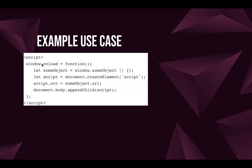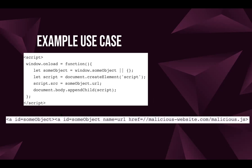Here's an example use case. Let's say we have this script — when it starts, it's going to get the object from window.someObject from the DOM, and then you have a simple OR of just an empty object. Then you create a script element, set script.source to the URL from that object, and append it to the document. What we would do is write HTML like: an anchor tag with id equal to someObject, another anchor with id equal to someObject and name equal to url, and you can set it to a link for some malicious script you want to run.